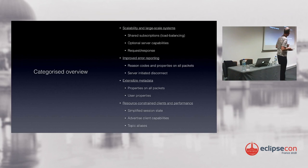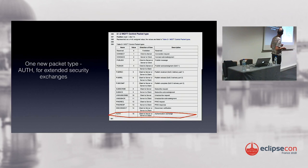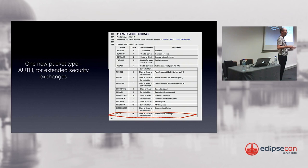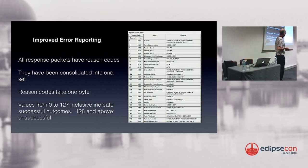A quick run-through of the main changes between version 5 and 3.1.1: all the existing packets remain the same. We have one new packet called Auth, which allows challenge-response authentication exchanges. There's no prescribed way you have to use it, so it's entirely up to the clients and servers how they want to implement it.